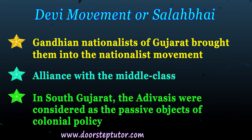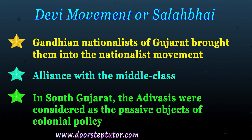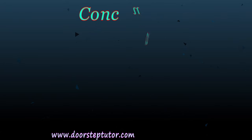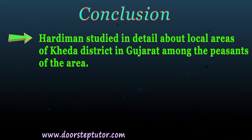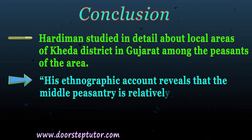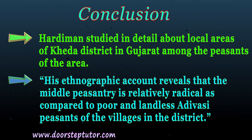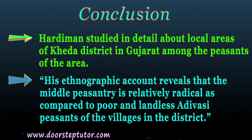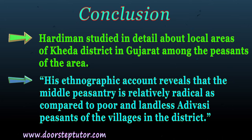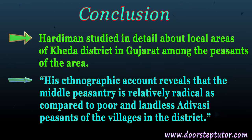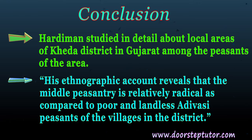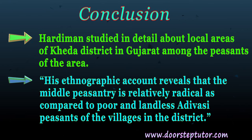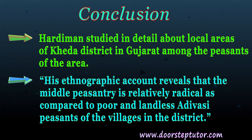These Adivasis were considered as the passive objects of colonial policy. Coming to the conclusion, Hardiman studied in detail the local areas of Kheda district in Gujarat among the peasants and tribal people of that area. His ethnographic account reveals that the middle peasantry is relatively radical as compared to poor and landless Adivasi peasants of the villages in the district. The poor and landless could not raise their voices, but in the end the Adivazis got a platform because of the help of Gandhian nationalists.